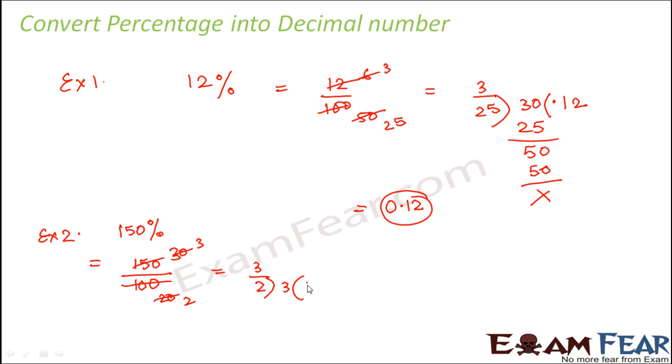When you convert it into decimal form, 2 goes into 3 once, remainder 1. So you have 1 point, add a 0. 2 goes into 10 five times. Therefore 3 by 2 is equal to 1.5. So you see 1.5 is greater than 1, and that is why the percentage is greater than 100.